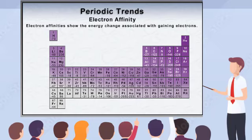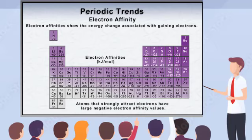Electron affinity is the energy change associated with gaining electrons. Like ionization energy, electron affinity is measured for single atoms in the gas state, and reported as kilojoules per mole of atoms. Notice that the chart on the screen depicts most of the electron affinities as negative numbers. This means that these elements do not require energy to gain an electron, but actually release energy as the incoming electron is attracted to the nucleus of a non-charged atom.